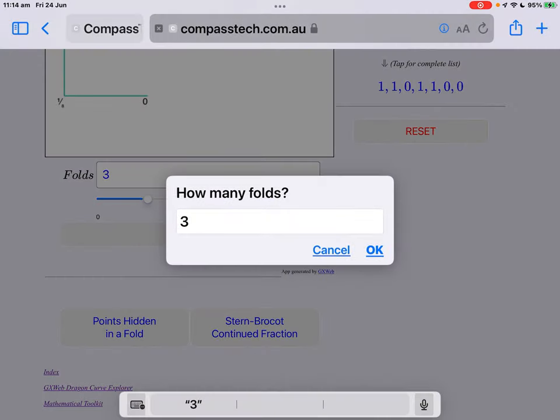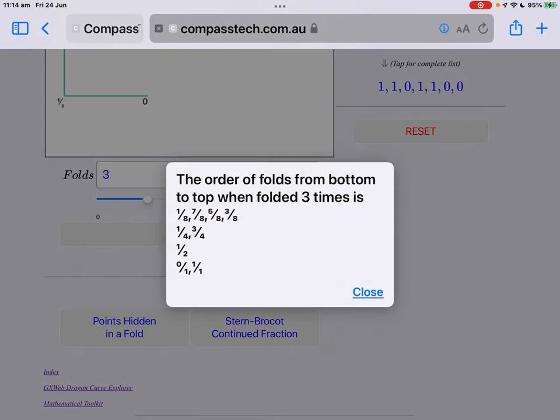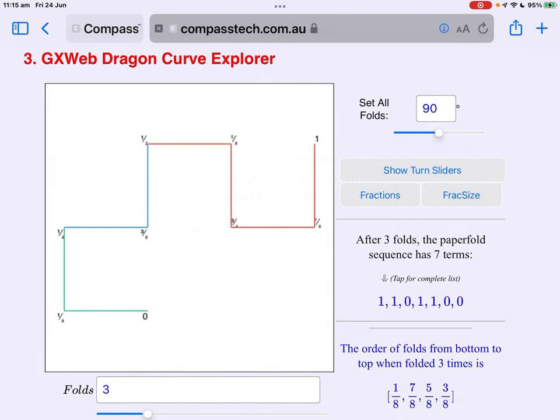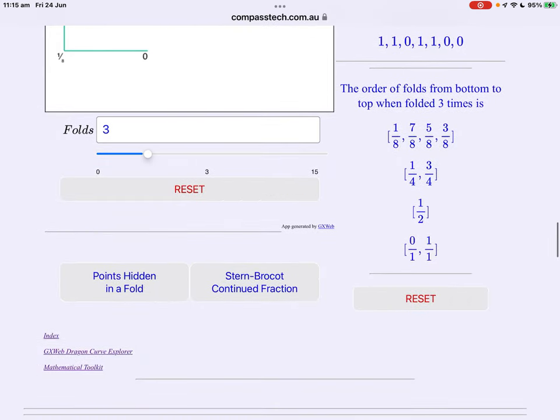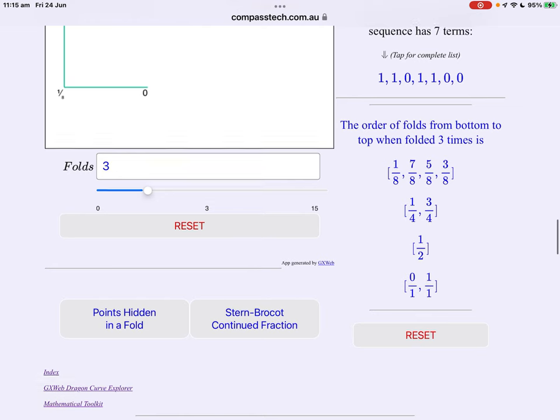While we're here let's revisit our other point of interest, points in a fold. Let's start with three again just to revisit. The order of folds from bottom to top when folded three times, zero one, a half, one quarter, three quarters and then the eighths in that order. So here we have a tool for exploring the order of our fractions as well.